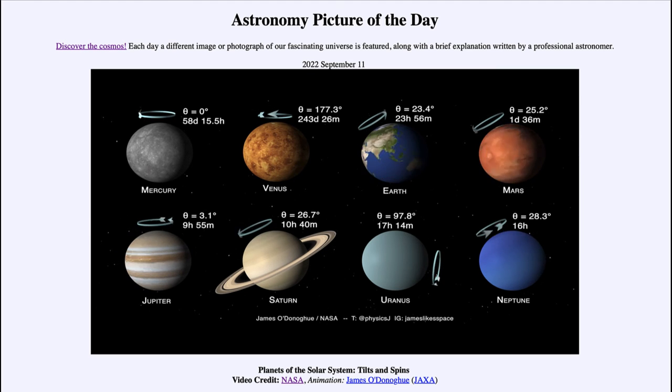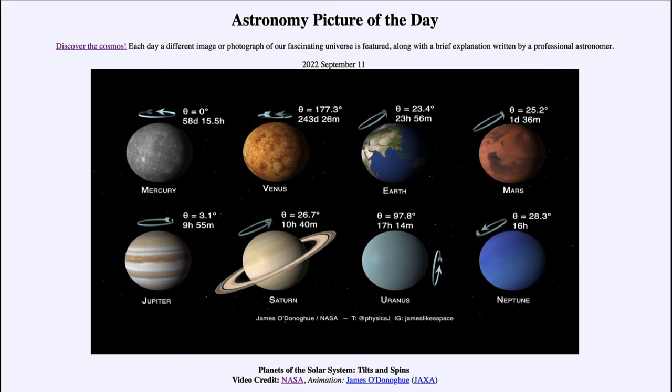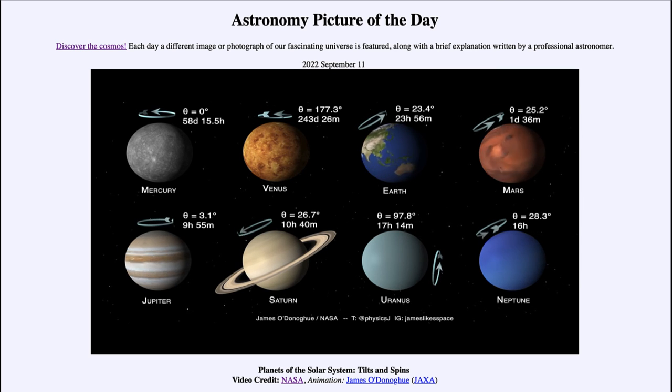Here we get to see in a time lapse video the rotation of each of the eight planets in the solar system and showing the tilt of them on their axes.